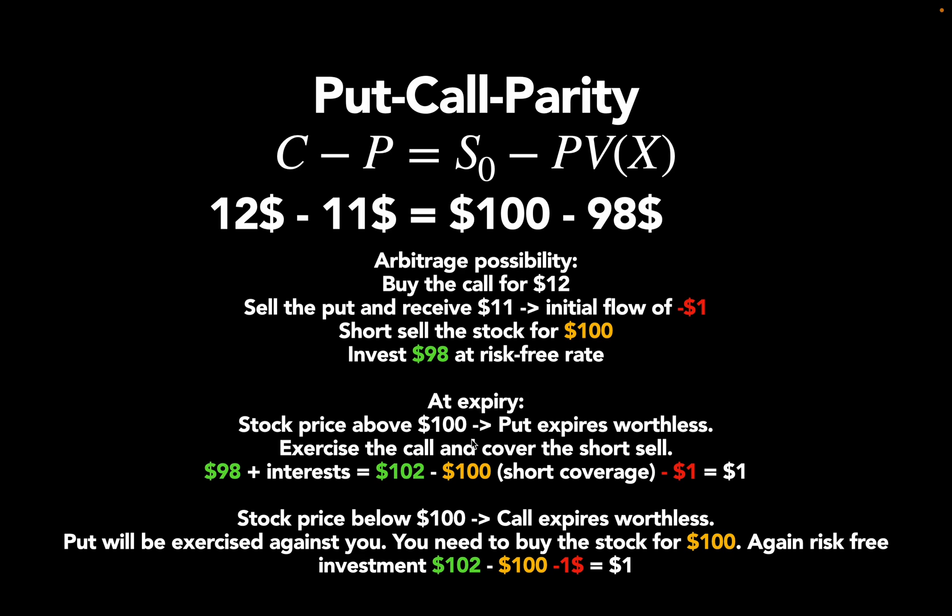With that, you would cover your short sell. So, finally, you would have $98 plus interest, so $102 per assumptions minus $100 for the short sell coverage minus the initial $1 you paid for both options. So, you end up with a net profit of $1.